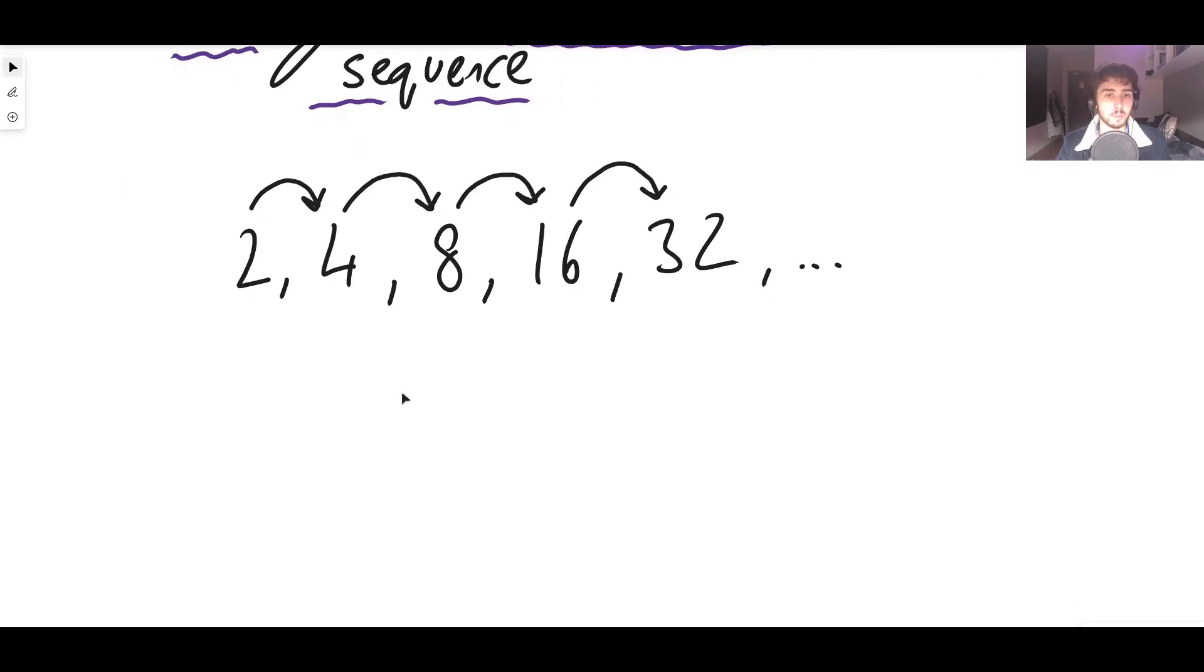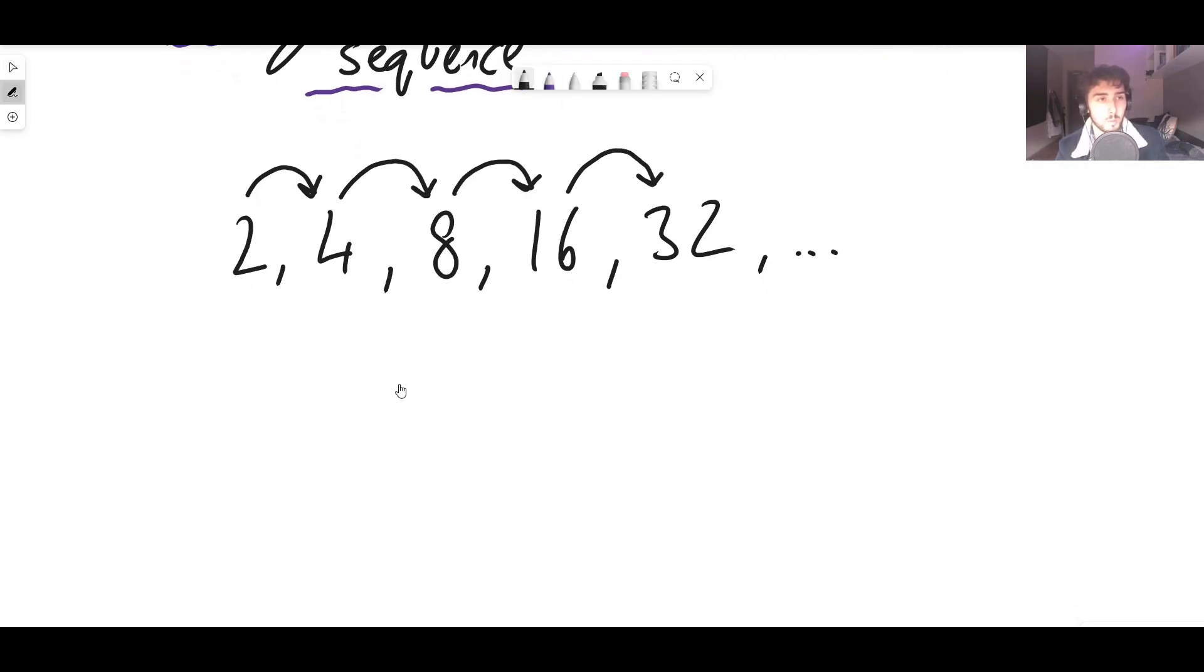So here's an example of another one. You could have let's say 27, 9, 3, 1, 1 third, 1 ninth, etc.